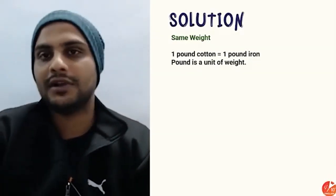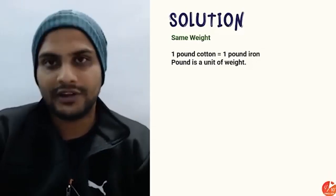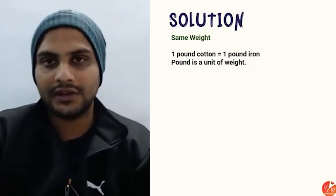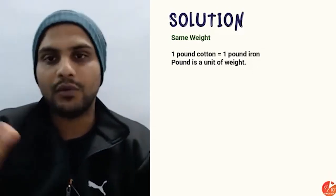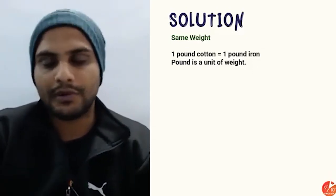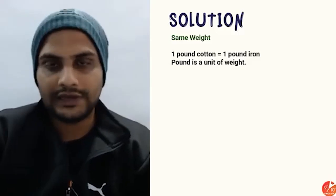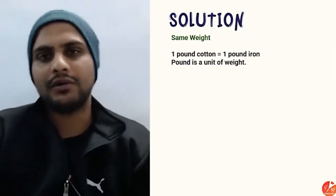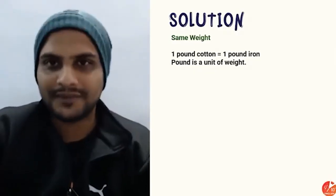Pound is a unit of weight, just like how we use kilograms. So one pound of cotton and one pound of iron are the same thing.